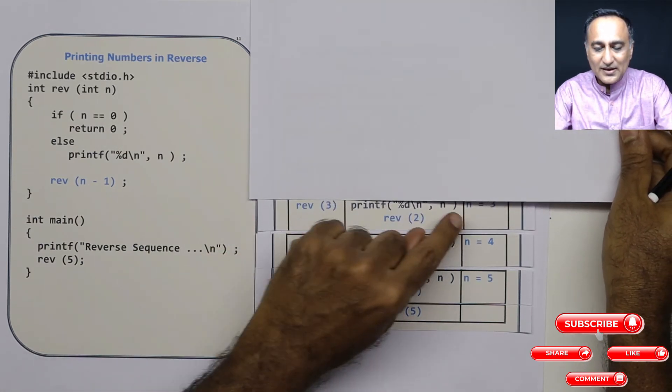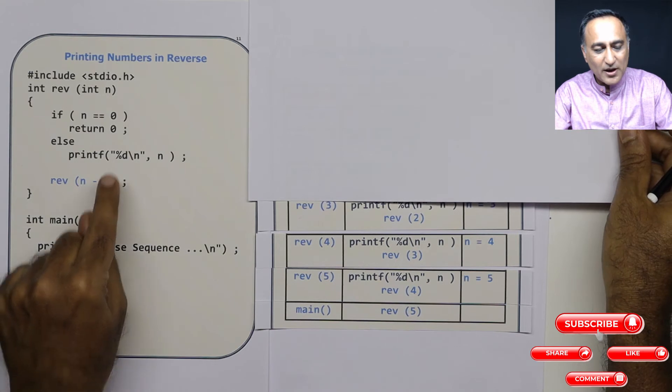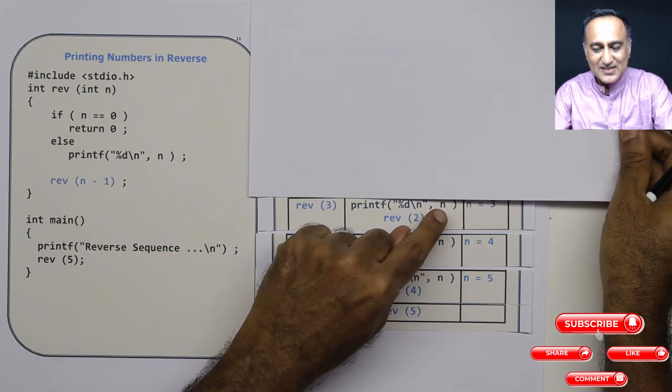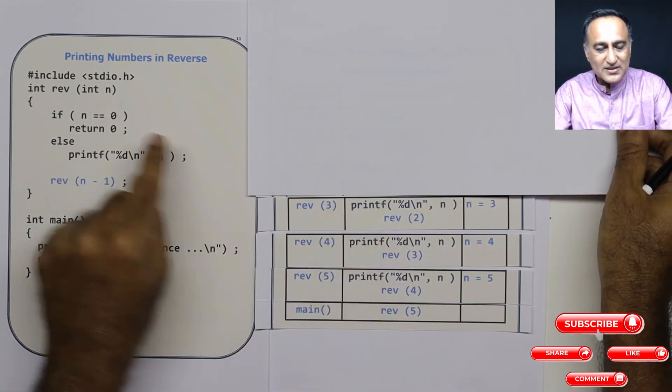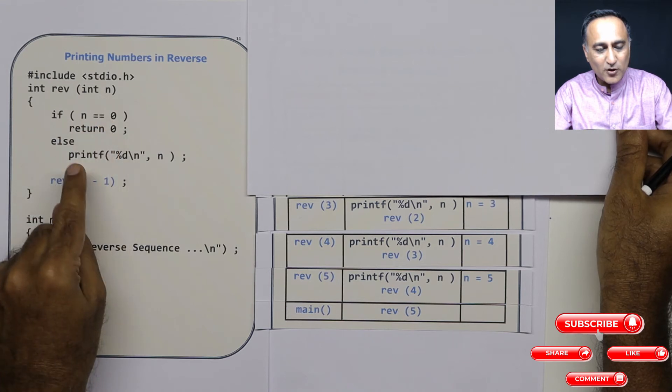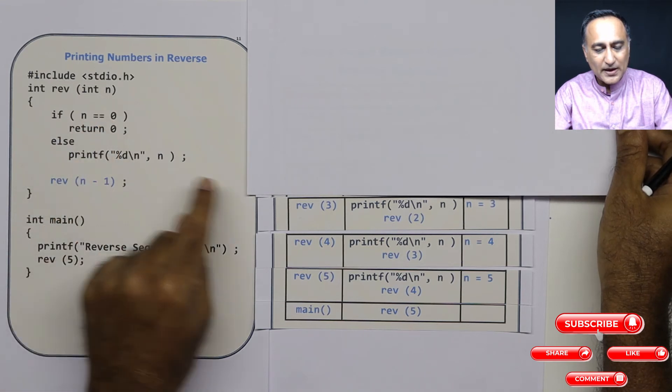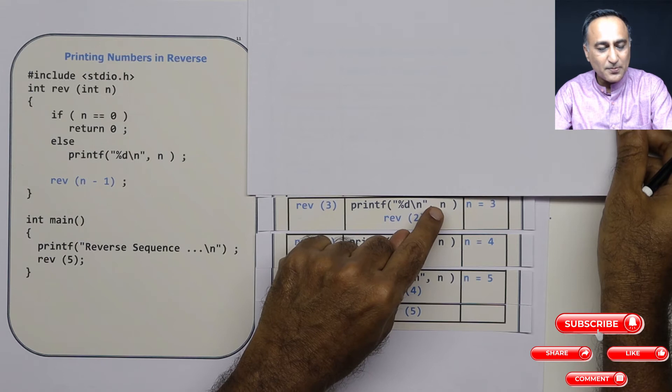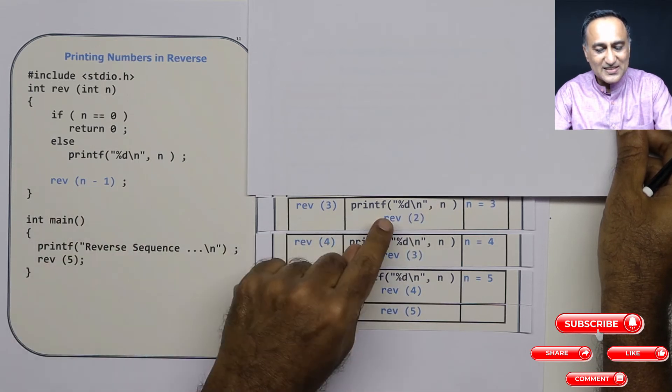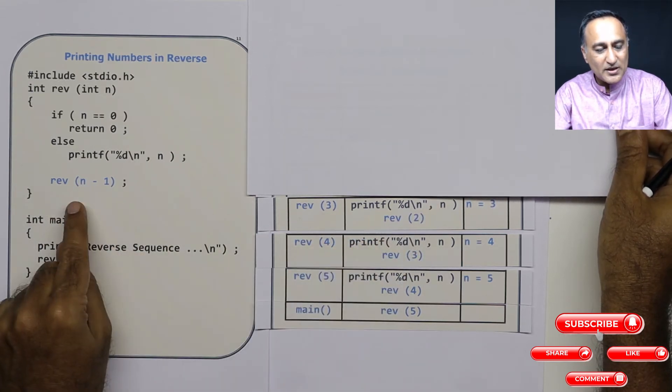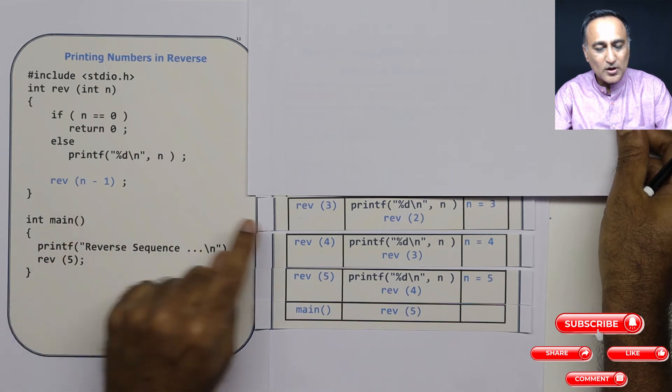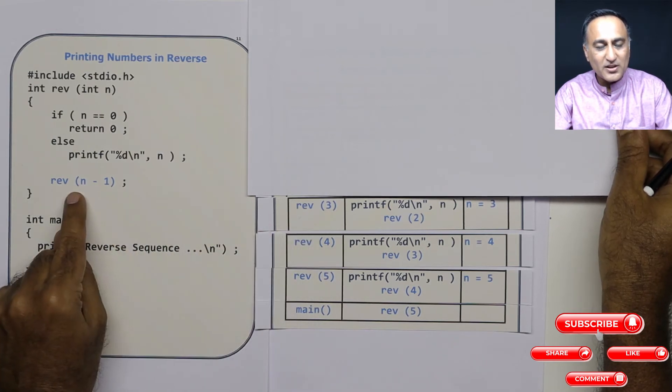When I call reverse of 3, I'm passing the value of n as 3. n is 3. Now since n is 3, 3 equal to 0 is false. I'm coming to the else part. I'm printing 3. 3 is being printed. Then n is 3 minus 1 is 2. So I'm calling reverse with the value of 2. So after reverse of 3, I'm calling with reverse of 2.